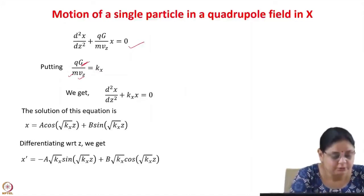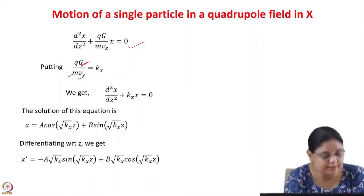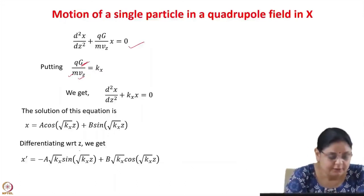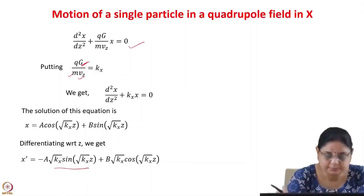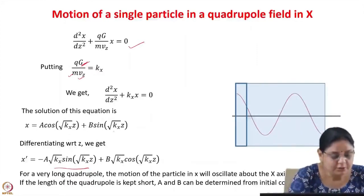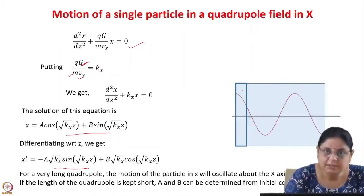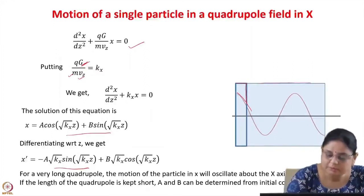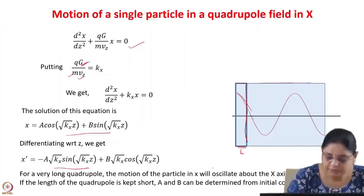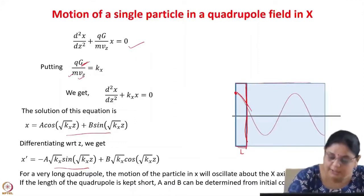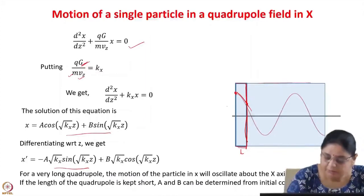This is the equation of a simple harmonic oscillator. The solution is x = A·cos(√kx · z) + B·sin(√kx · z). Differentiating with respect to z gives x'. The motion inside a quadrupole is therefore sinusoidal. If the quadrupole has a short length, the motion need not be fully oscillatory — you can terminate it early and determine the constants A and B.